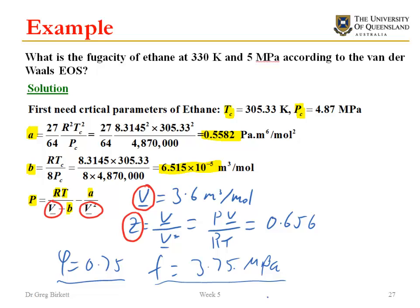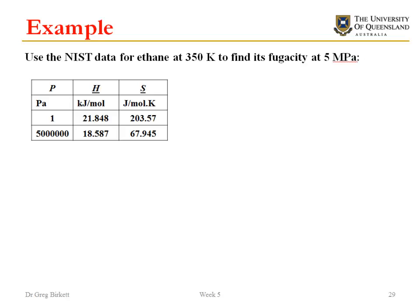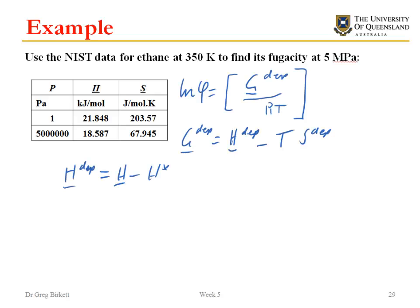Now we can also calculate the fugacity using data from NIST. To calculate the fugacity coefficient using the data from NIST, what we're going to use is the equation just using the definition of the fugacity and the fugacity coefficient. Where the fugacity coefficient is the Gibbs departure, or Gibbs real minus Gibbs ideal, divided by RT. To calculate this Gibbs departure then we're just using the definition of Gibbs free energy extended to Gibbs departure. Our job now is to calculate each of the H departure and S departure, which we've done previously but we'll go through here.